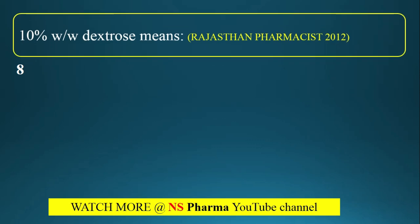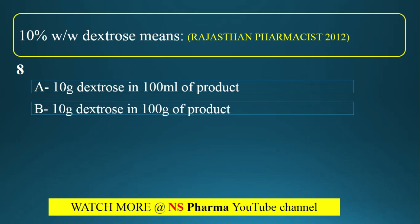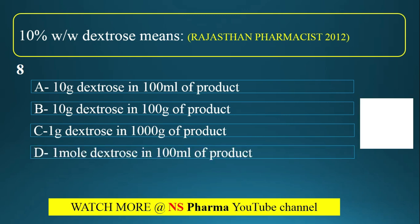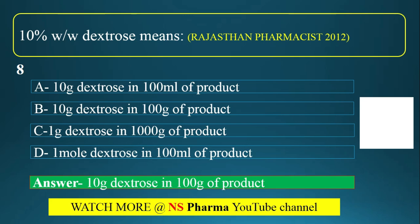Question number 8: 10% weight per weight dextrose means? This is from Rajasthan Pharmacist 2012. Options include 10 gram dextrose in 100 ml of product, or 10 gram dextrose in 100 gram of product. The correct answer is Option B — 10 gram dextrose in 100 gram of product. Since it is weight per weight, both must be in weight units (gram and gram), not milliliters.